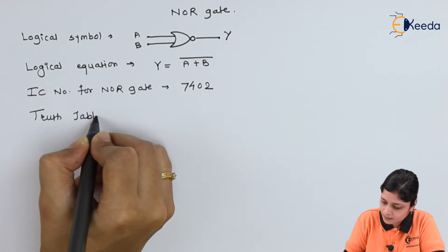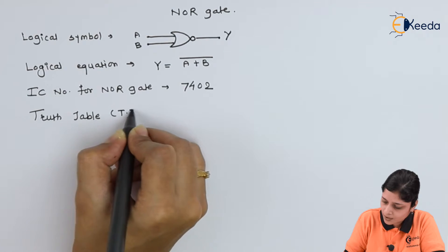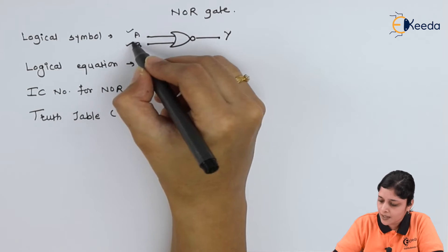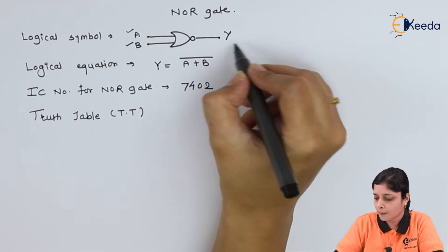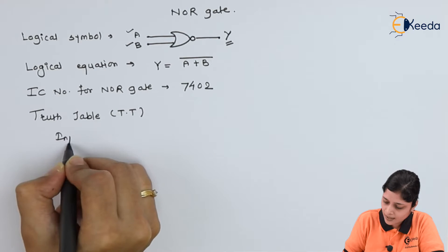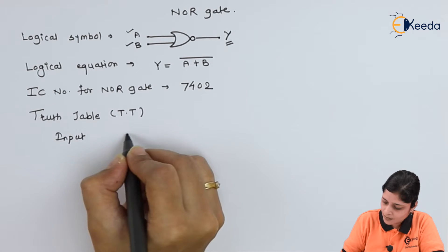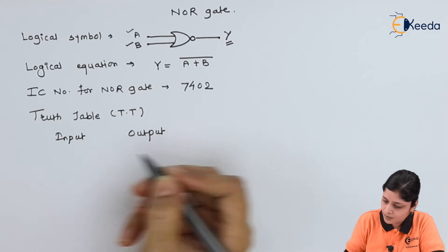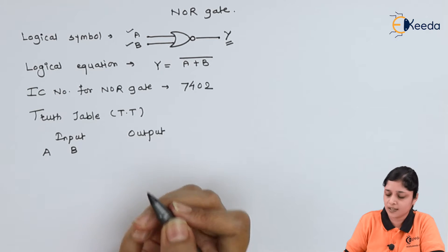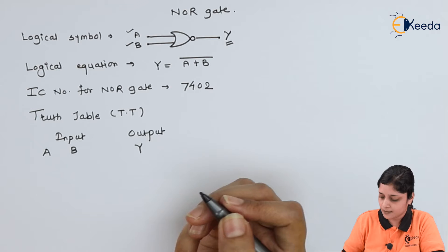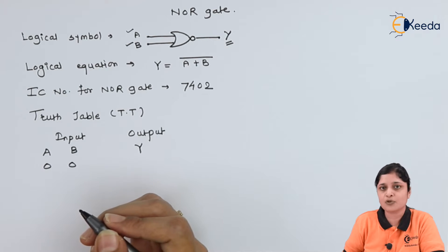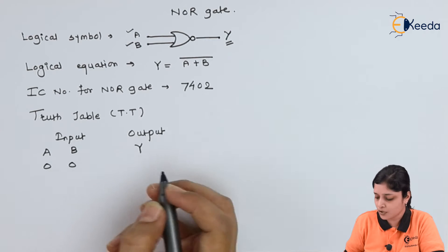This truth table you can write T.T. also. So A and B is the input side, Y is called as the output side. We will write input and then output. How many inputs are there here? Two inputs are there, output is Y. Now possible combinations: as the inputs are two, so possible combinations are four.